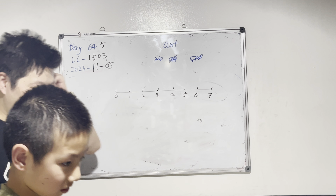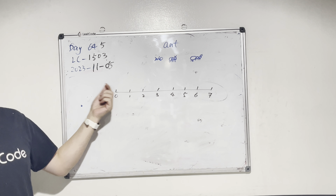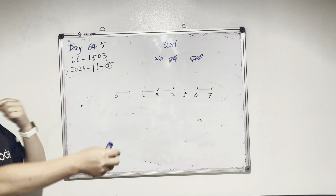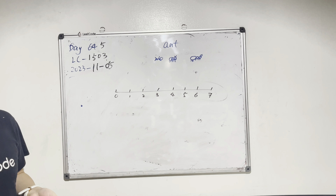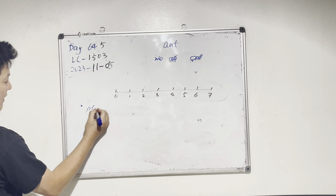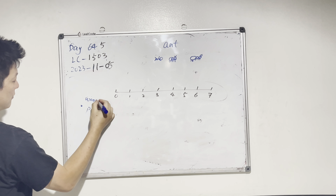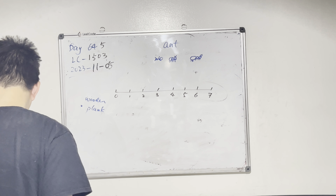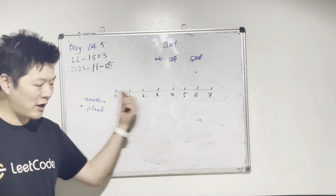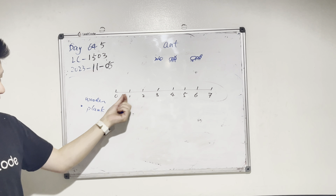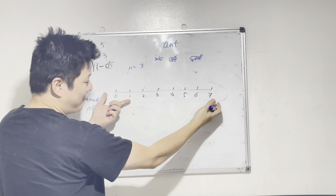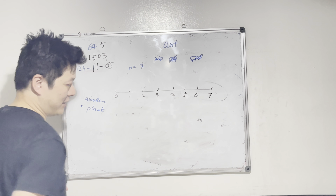Imagine we have a one-dimensional wooden plank — just imagine it, even though in reality it can't be truly one-dimensional, we live in a 3D world. We treat it as one-dimensional. Each unit is one step, so for example when n equals seven, we have eight units from zero to seven.